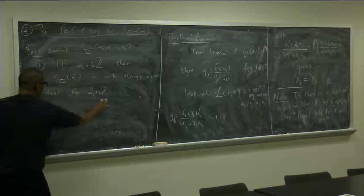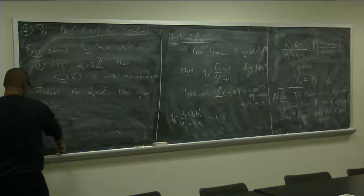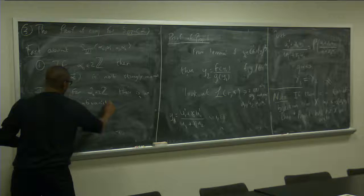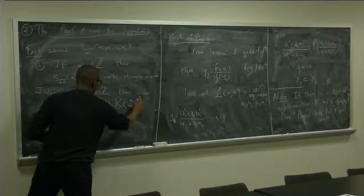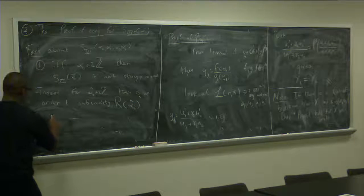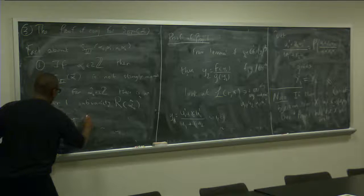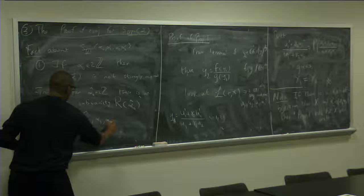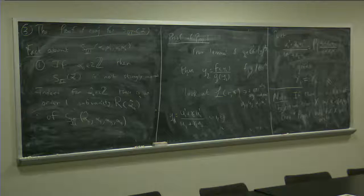Right? And indeed, there are four alpha node hat in 2Z, so there is an order 1, let's call it R alpha node hat of, so S6, yeah, alpha node hat of, so S6 alpha node hat.